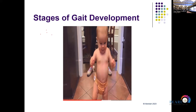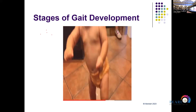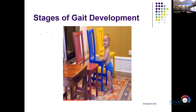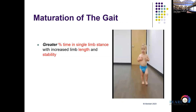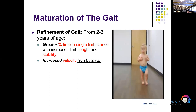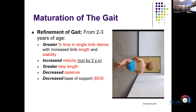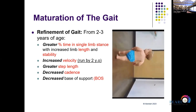In the beginning, gait in toddlers is a wide-based gait with flat feet and hands out to the side to maintain balance. As they get older, refinement occurs: greater time in single-limb stance, increased velocity, the start of running by two years of age, increased step length, decreasing cadence, and decreasing base of support. By eight years of age, they walk like an adult.